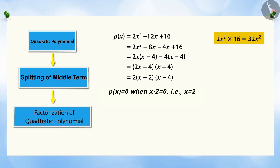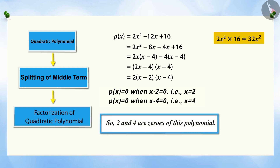Therefore, for X minus 2 equal to 0, that is X equal to 2, or X minus 4 equal to 0, that is X equal to 4, the value of the polynomial will be 0. So 2 and 4 will be the zeros of this polynomial P(X).